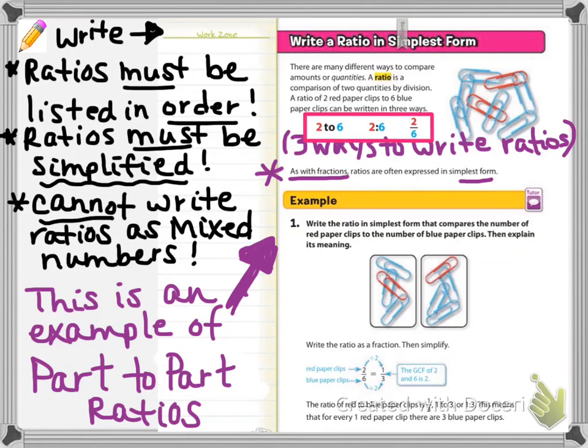If you look under example one, they've taken the picture and separated it out with one red paperclip per three blue paperclips, because it has to go to simplest form. Two-six can be simplified to one-third. You can see the work that the greatest common factor of two and six is two, so that's what they are dividing by to simplify the fraction. You need to write ratios in order, make sure they are in simplest form, but you cannot change improper fractions to mixed numbers.